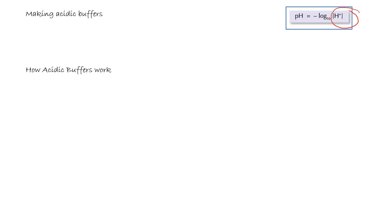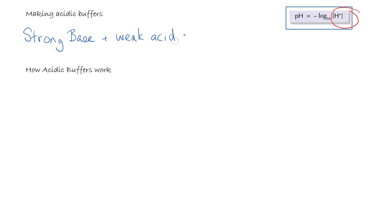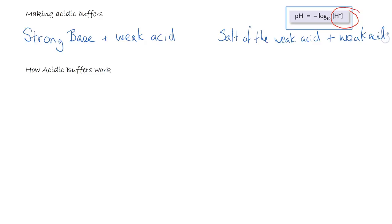The two ways we can make an acidic buffer are: either we can have a strong base and react that with a weak acid, or we can have the salt of the weak acid combined with a weak acid. We'll look at both of these in more detail when we talk about how we calculate the pH, but these are the two ways of creating an acidic buffer solution.